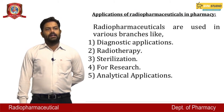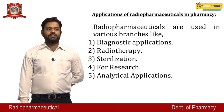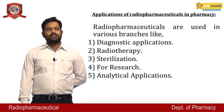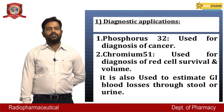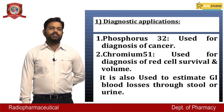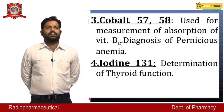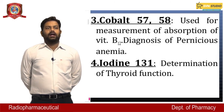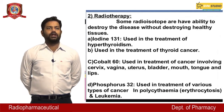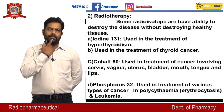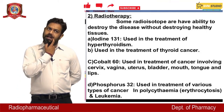Applications of radiopharmaceuticals in pharmacy include: diagnostic applications, radiotherapy, sterilization, research, and analytical applications. For diagnostic purposes: phosphorus-32 for cancer diagnosis; chromium-51 for red cell volume survival and GI blood loss estimation; cobalt-57/58 for measuring vitamin B12 absorption and diagnosing pernicious anemia; iodine-131 for determination of thyroid function. In radiotherapy, iodine-131 is used for treatment of hypothyroidism and thyroid cancer.